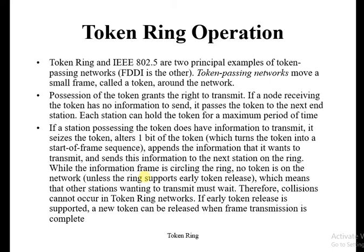Token ring and IEEE 802.5 are two principal examples of token passing networks. FDDI is another example. Token passing networks move a small frame called a token around the network. Possession of the token grants the right to transmit. If a node receives a token but has no information to send, it passes the token to the next station. Each station can hold the token for a maximum period of time.